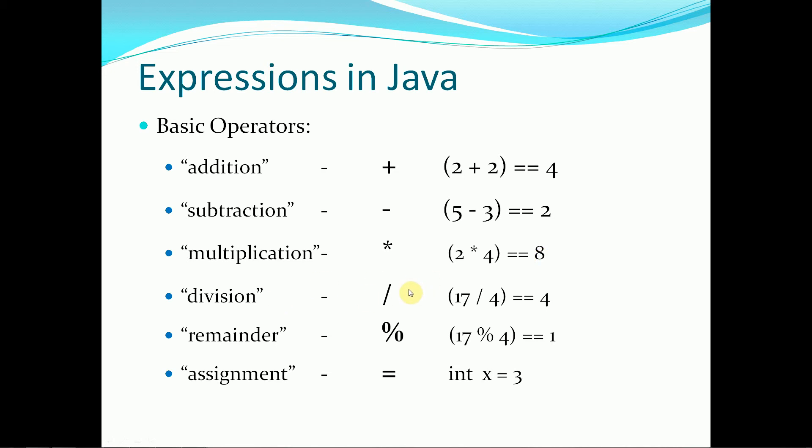Division we use the slash, and so 17 divided by 4 is the equivalent to 4. And even though there's a remainder, we're only going to be worried about how many times 4 goes into 17 in terms of whole values for right now.